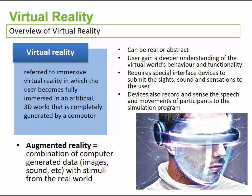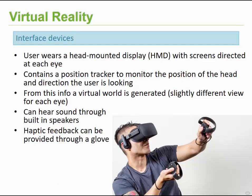For both virtual and augmented reality we need devices that we wear, known as a head-mounted display. Typically these come in the form of the Oculus, the Microsoft HoloLens, or Google Cardboard, where you use your cell phone. These devices use screens directed at each one of your eyes, which ultimately creates a 3D type environment and provides you access to that information.